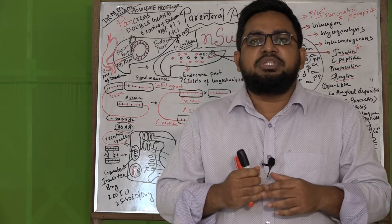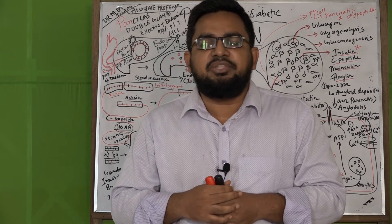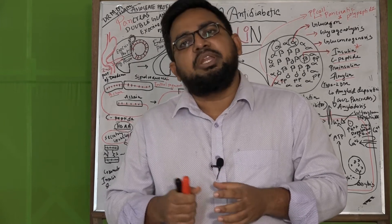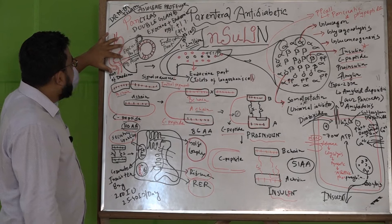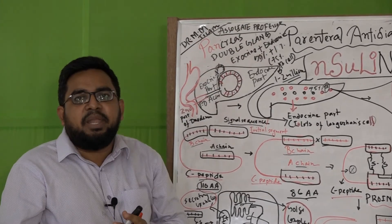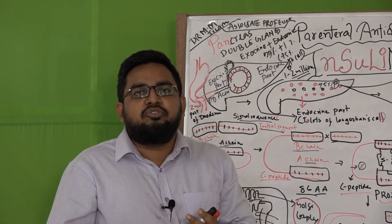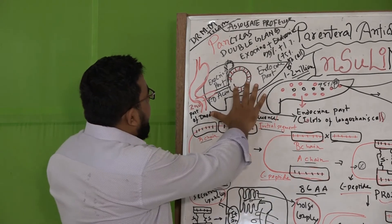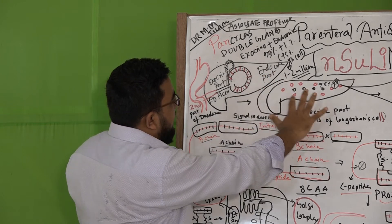The endocrine portion is composed of clusters of cells called the islets of Langerhans, which secrete many hormones. One of these cells is the beta cell, which releases insulin, as well as proinsulin, connecting peptide (C-peptide), and the important hormone amylin. The exocrine function accounts for 99 percent of pancreatic functioning, while the endocrine gland accounts for only 1 percent.